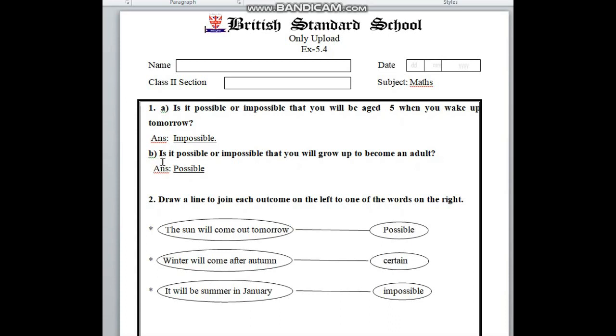In number B here, is it possible or impossible that you will grow up to become an adult? Here will be possible because to become an adult, obviously we have to grow up.